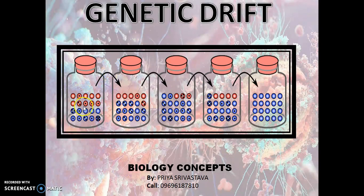Both colours correspond to two different alleles of one gene in a population. The gene is one, but these two colours depict two different alleles. In each new generation, the organisms reproduce at random. To represent this, randomly select a marble from the original jar and deposit a new marble with the same colour as its offspring into a new jar. This represents the transferring of alleles.